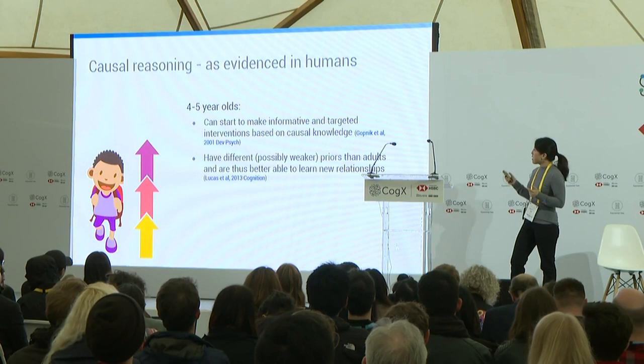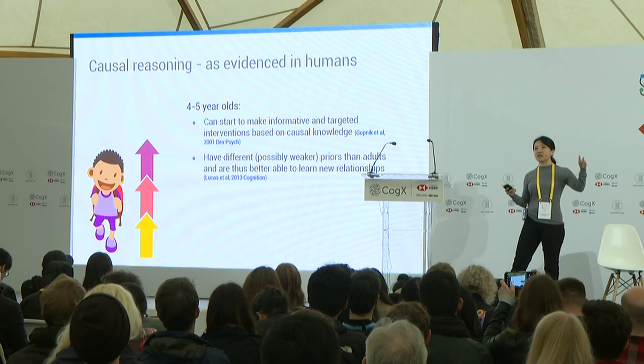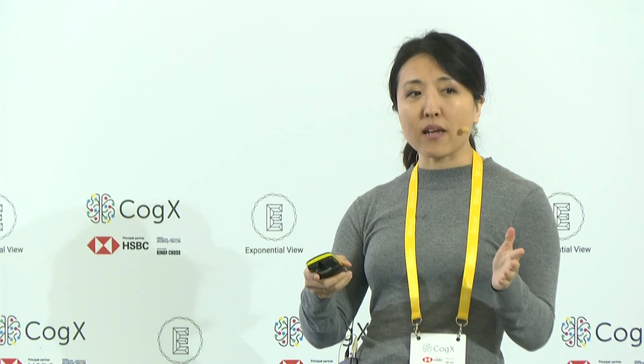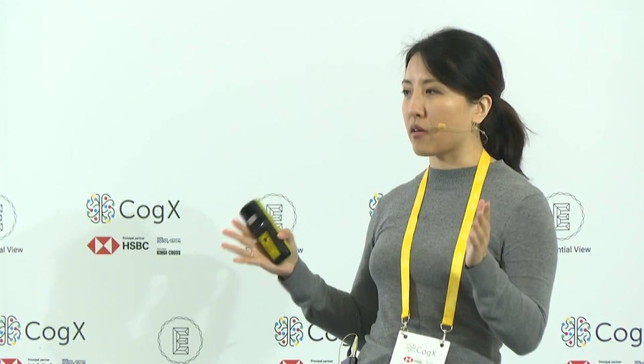At four to five, we can start to make informative and targeted interventions based on causal knowledge — actively seeking out information in the environment to develop causal knowledge. Interestingly, children have been shown to in certain situations learn causal relationships that are more complicated than adults. Alison Gopnik and her lab have done wonderful work where they put both children and adults in situations where the correct inference is a more complicated causal conclusion, but adults tend to infer a simpler relationship than it really is — because adults tend to have pretty strong priors for simpler causal relationships. Children don't have these priors yet, and that's why they can actually do better in these situations.